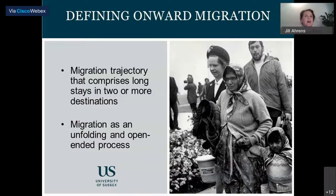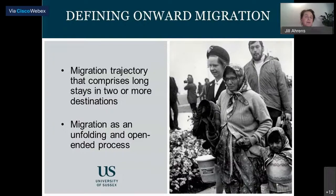Onward migration is a trajectory that involves extended stays in two or more destination countries. Acknowledging that any migrant can be a potential onward or return migrant allows for a more processual understanding of migration. After living in one destination, migrants may decide to move on to one or several new destination countries, changing previous destinations into points of departure. Despite growing scholarly interest, complex multinational migrations are nothing new — early theorizations by Ravenstein and Mabogunje already described migration processes that occurred in stages along particular pathways from smaller villages via towns to bigger cities.